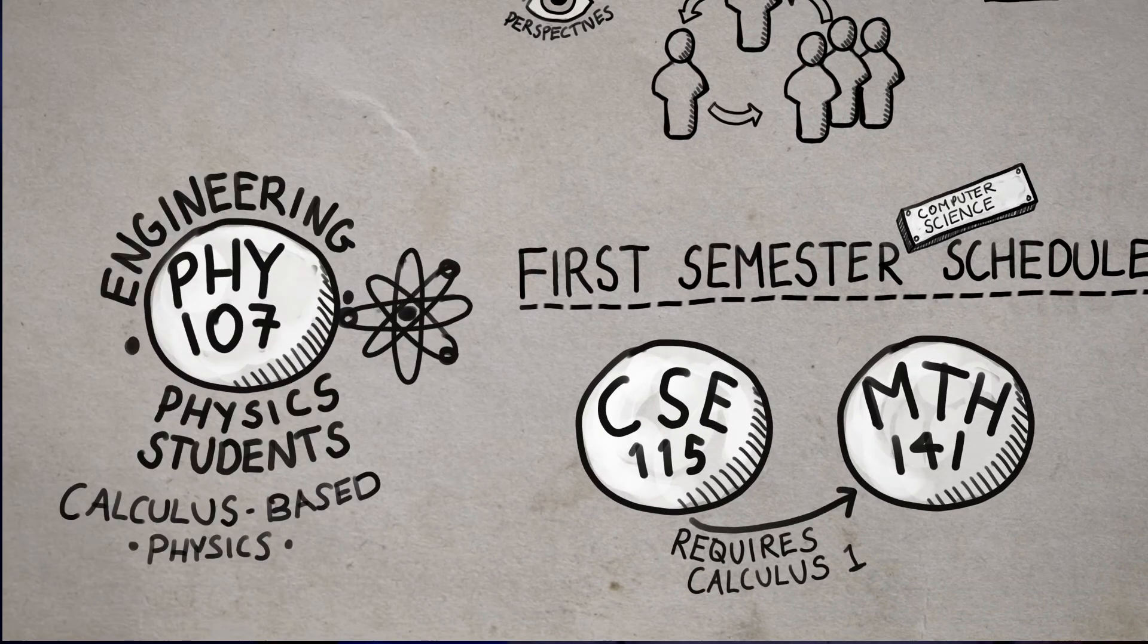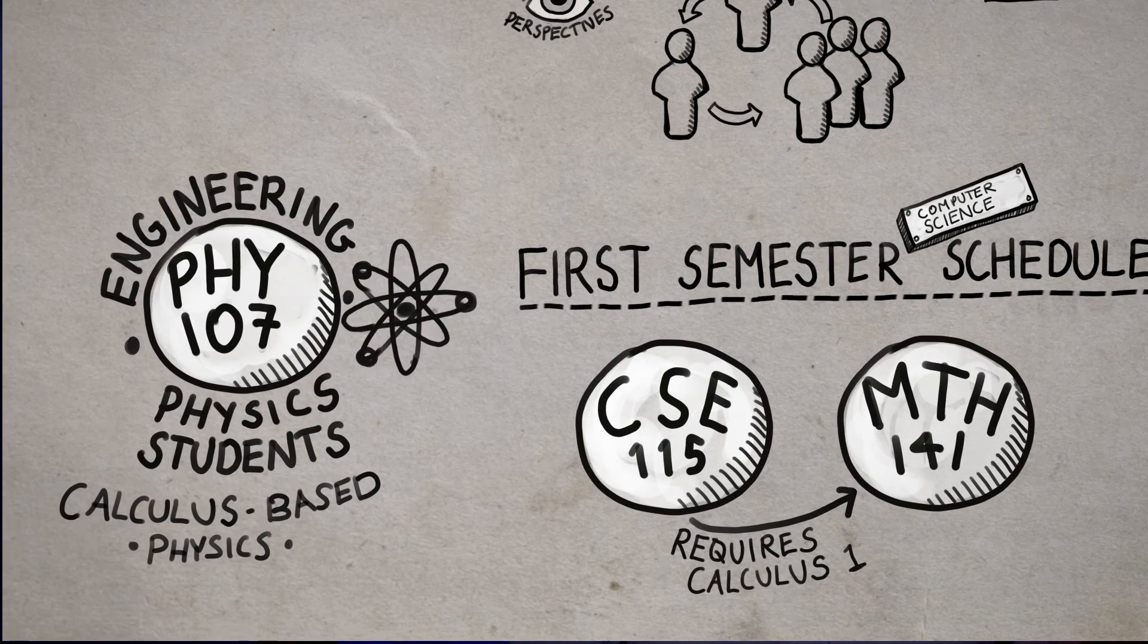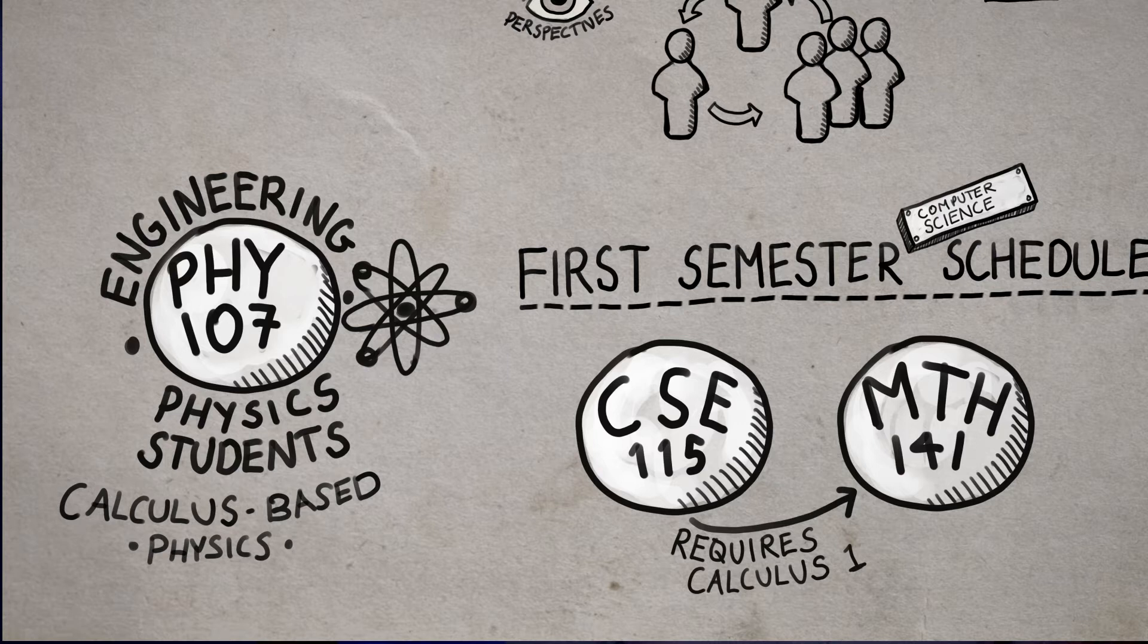Only Engineering Physics students will see Physics 1 on their first semester schedule. This is a calculus-based introductory physics class. Most other majors take it their second semester at UB.